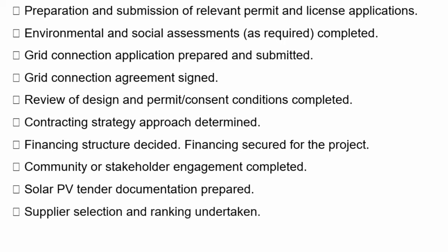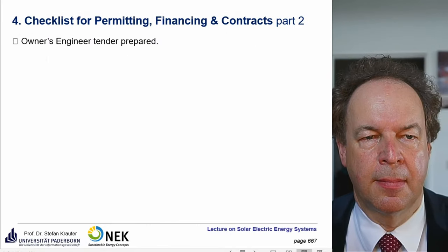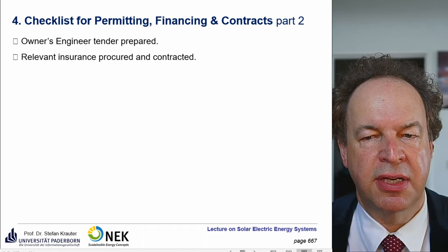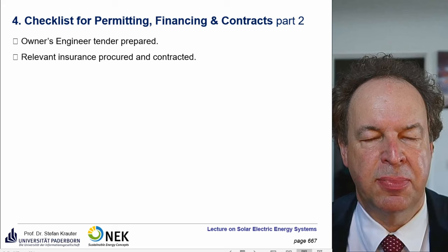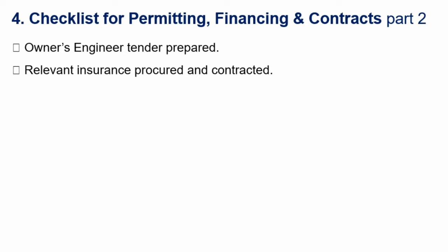Supplier selection and ranking — you don't use just one supplier, you use several, usually minimum three, ranked depending on quality, price, and whether they can keep the time schedules. Then the power purchase documentation prepared. Then the operation and maintenance concept and contracts are prepared. The owner's engineer tender prepared. Relevant insurance is procured and contracted — against theft, exceptional storms, earthquakes — what happens then with the power plant, is it insured or not? All of this has to be evaluated, procured, and contracted.